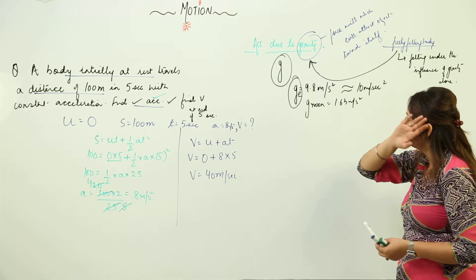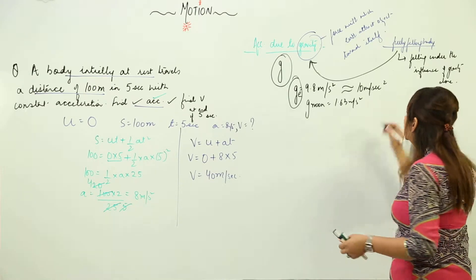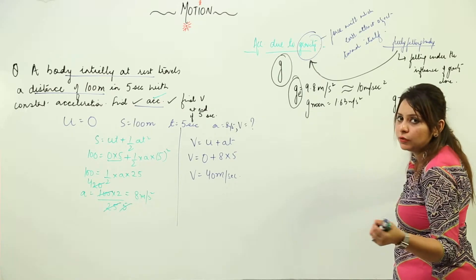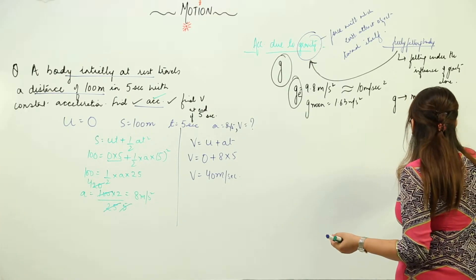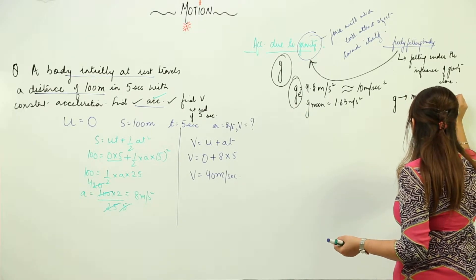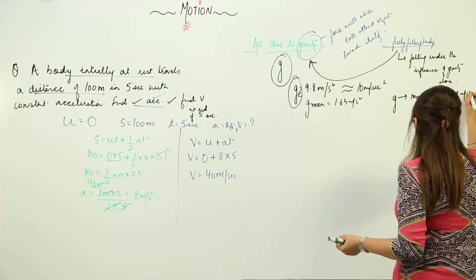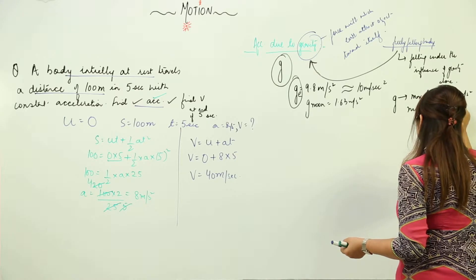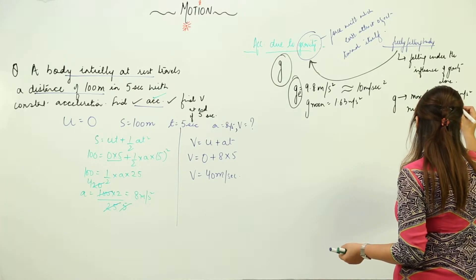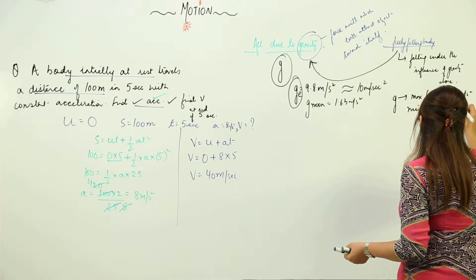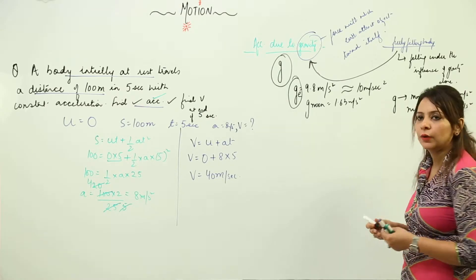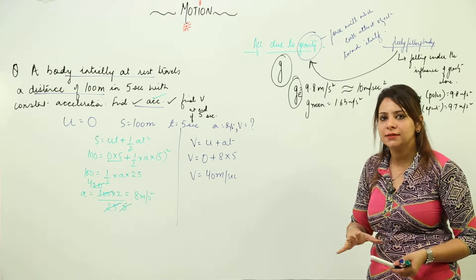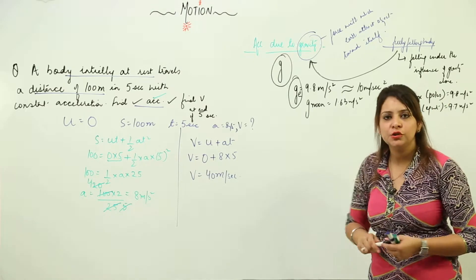This is acceleration due to gravity. The value of g is different at different places. On Earth, g is maximum at the poles — 9.8 meters per second squared — and minimum at the equator, which is 9.7 meters per second squared. Also, as you go into deep mines or up to a height, g decreases.